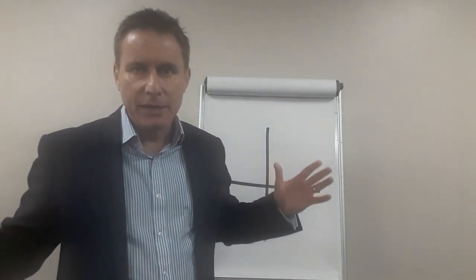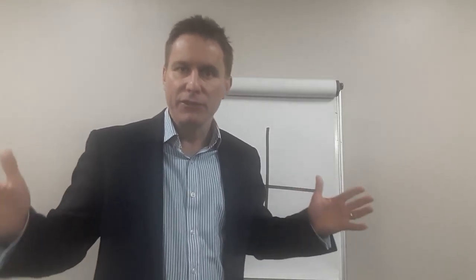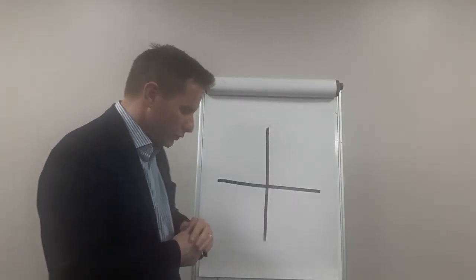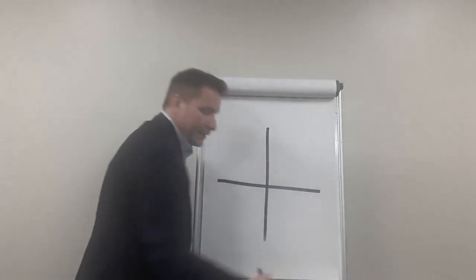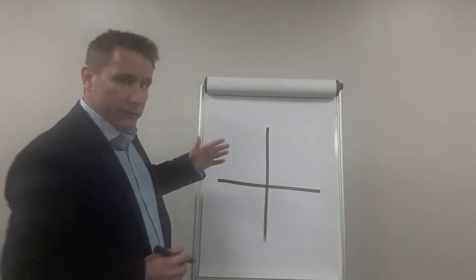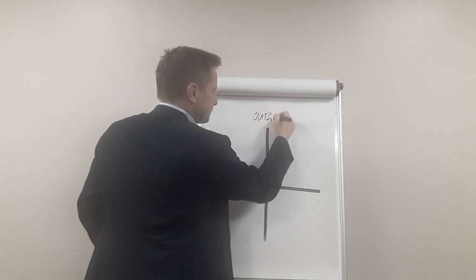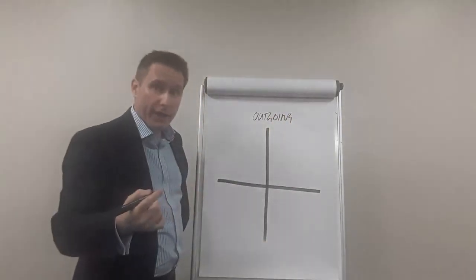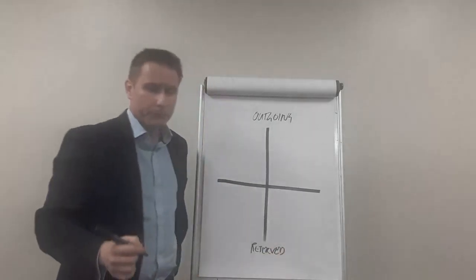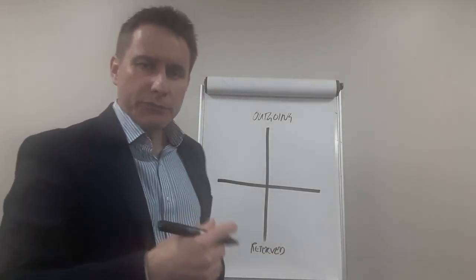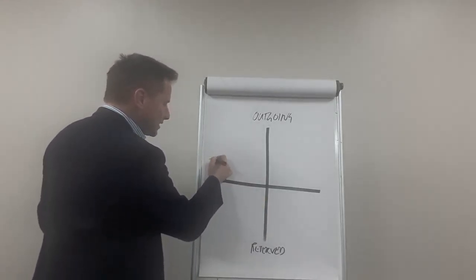There are two questions you need to ask yourself when observing people to get an idea of their behavioral style. Typically, the world will be divided into four behavioral styles. I'll cover those in due course. But the very first thing to understand is, ask yourself when observing people's behavior: Are they outgoing or are they more reserved?